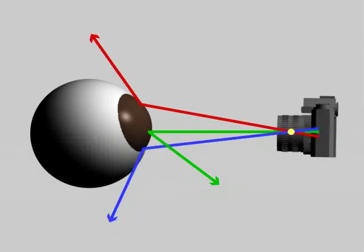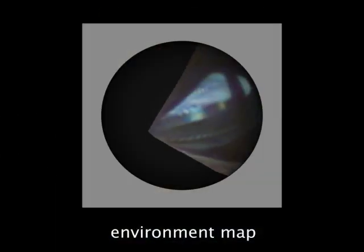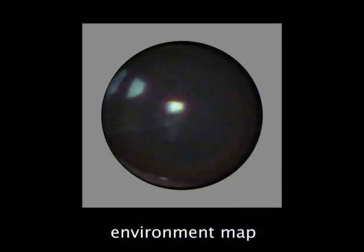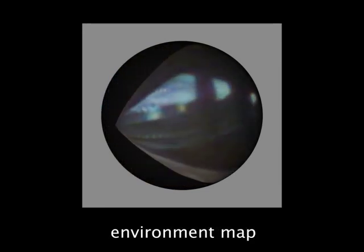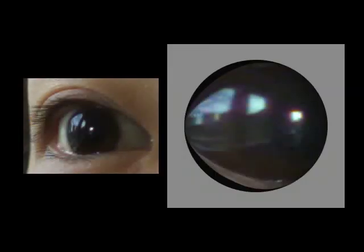As a result, from an image which contains at least one open eye, we can compute a wide field of view environment map of the surrounding scene. This environment map represents the scene's illumination distribution with respect to the eye. In other words, the eye can be used as a light probe.